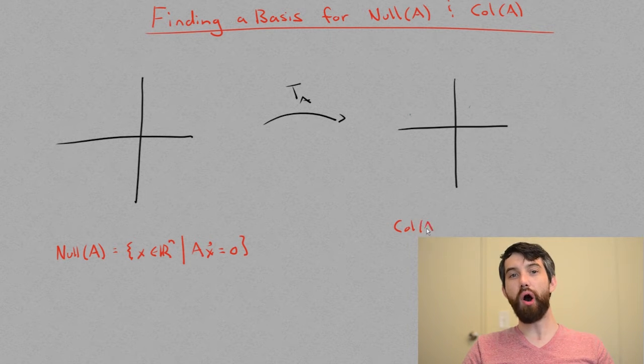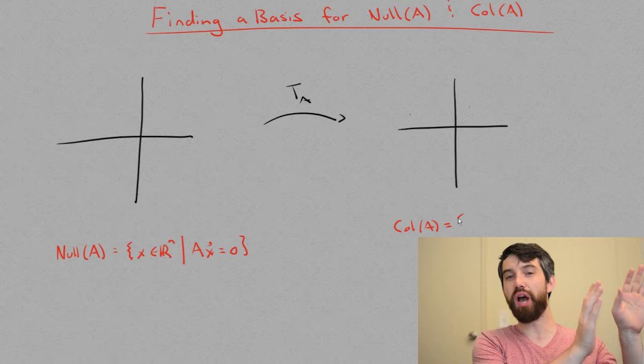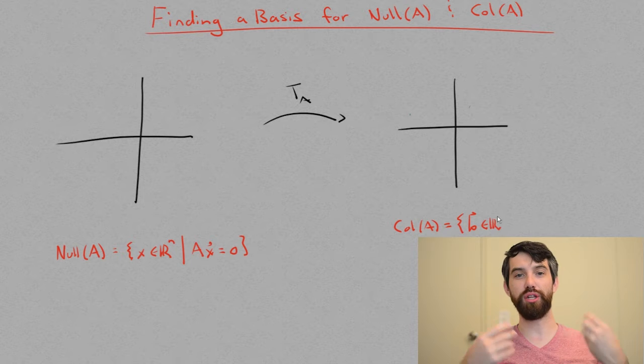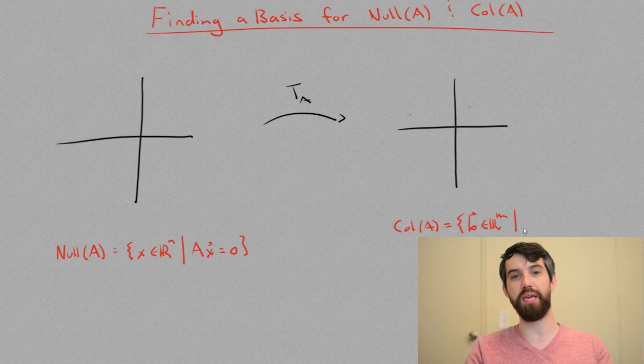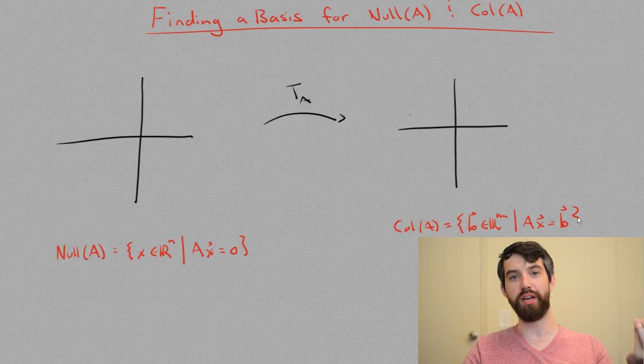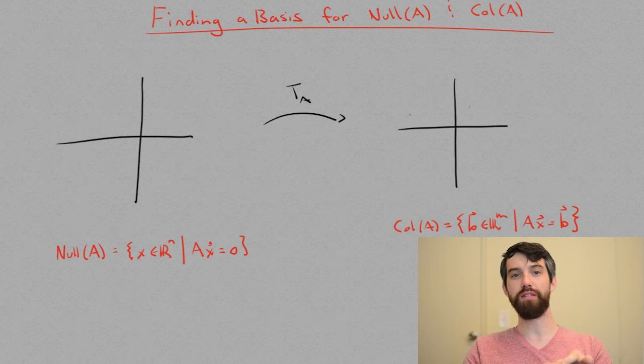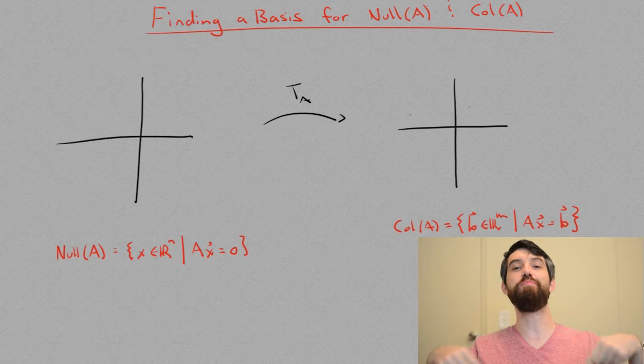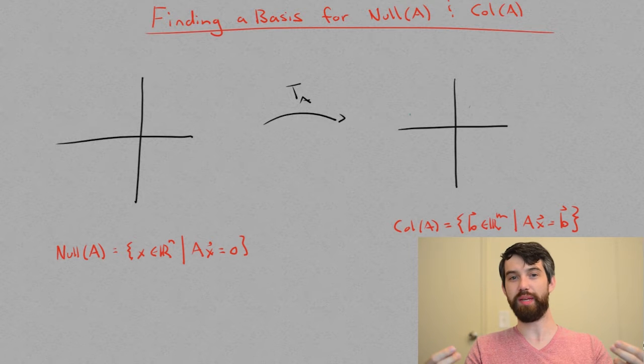Whereas the column space lives in the codomain and is represented as all of the different solutions to Ax equal to b. In other words, what vectors b can be written as a linear combination of the columns of A. The question is, how do I find a basis for those two different subspaces?